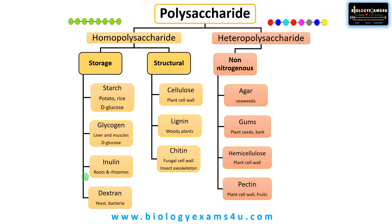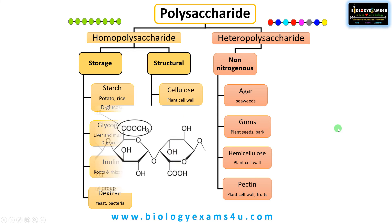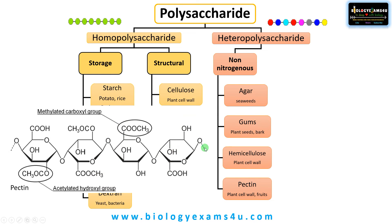The next heteropolysaccharide is pectin, present in the middle lamella of the plant cell wall and also in fruits. It is primarily composed of methylated polygalacturonic acid linked by 1,4 glycosidic bonds, with other sugars also present such as rhamnose, arabinose, galactose, and xylose. Pectin is abundant in apple and citrus fruits and is present in the middle lamella of the plant cell wall.